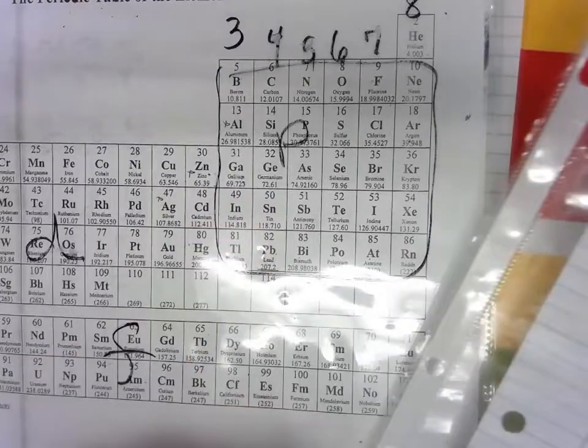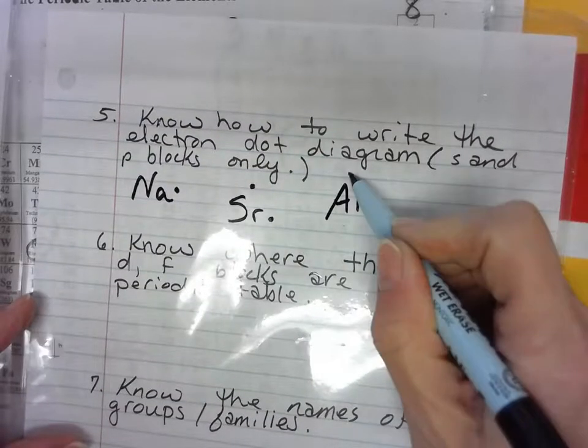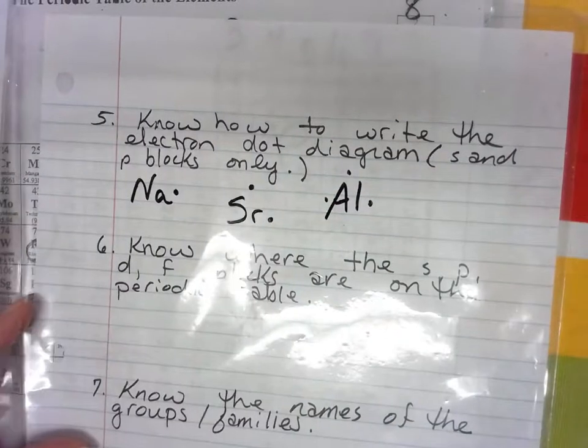With aluminum with three valence electrons, so we would write it aluminum with one, two, three dots.